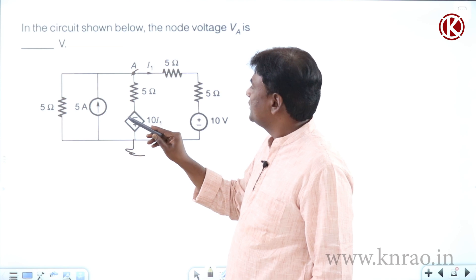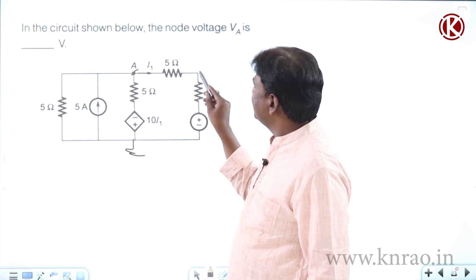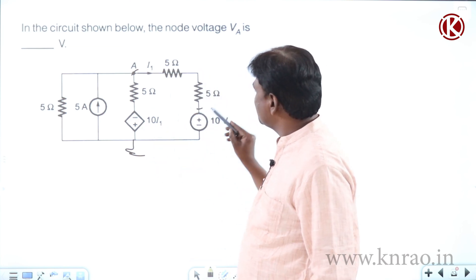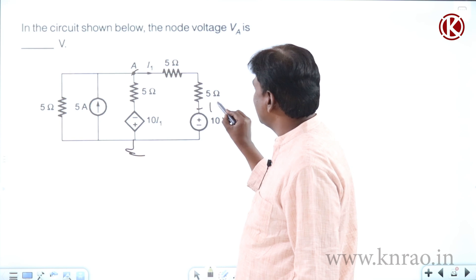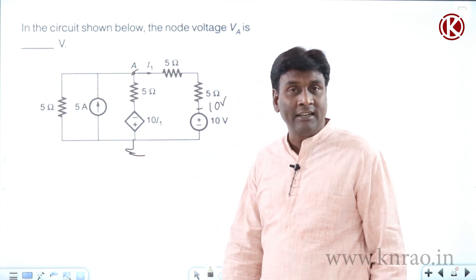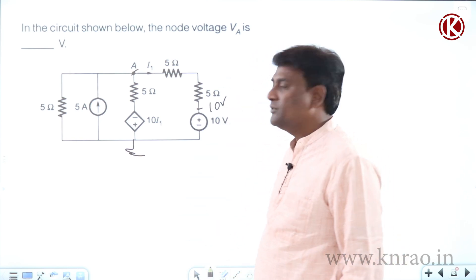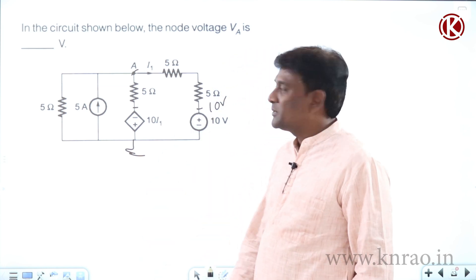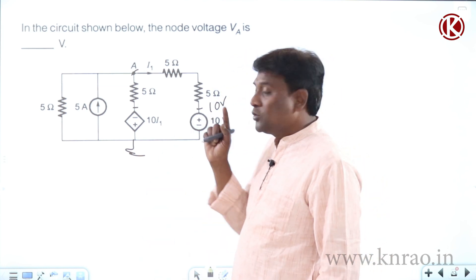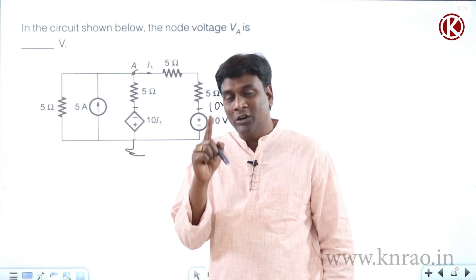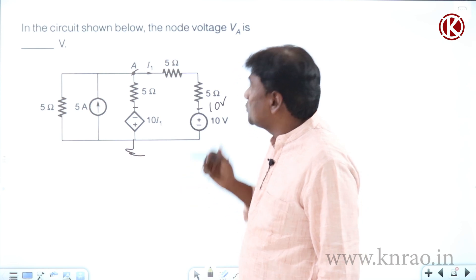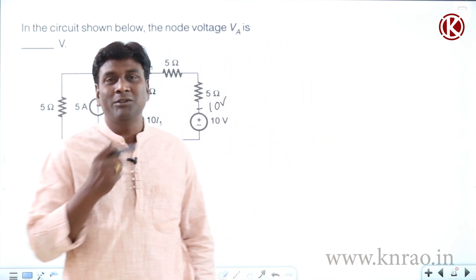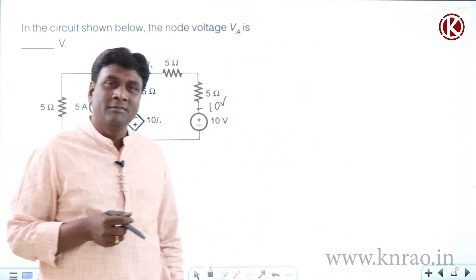Now how many nodes remain? This is the reference node, this is the VA node, and the others are not required — because with respect to reference, this is directly 10 volts since the voltage source is directly connected to reference. Here also the voltage source is directly connected to reference, so with only one nodal equation we can solve the problem, and the output is voltage, which is exactly what they asked.